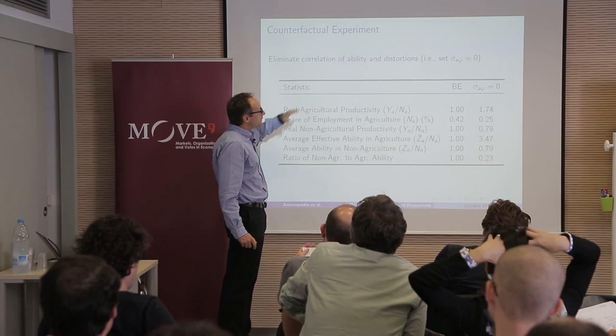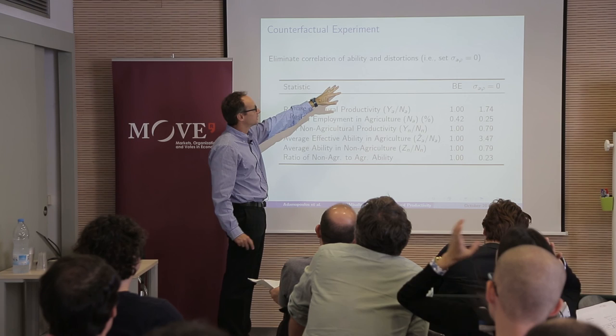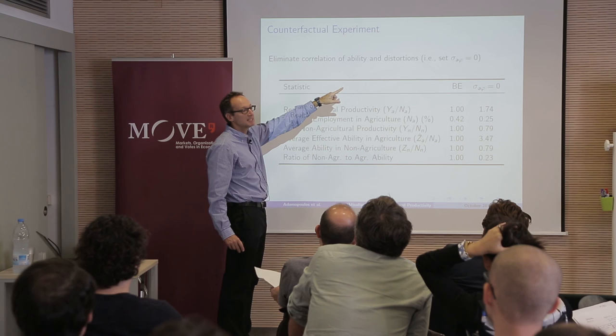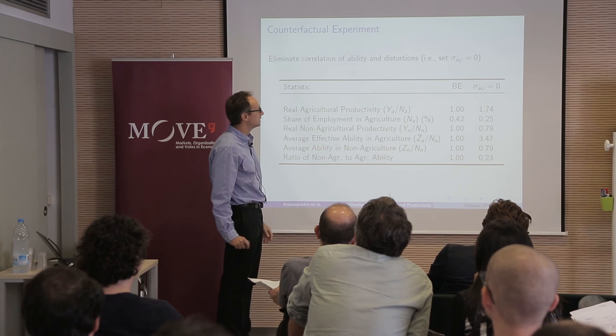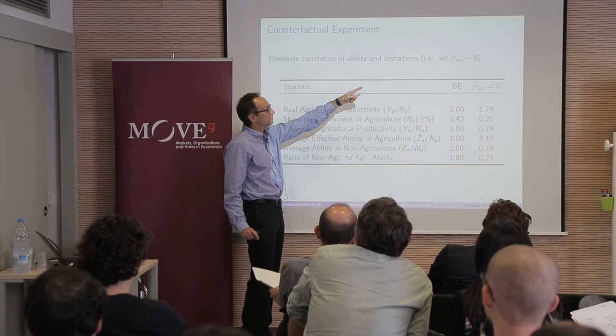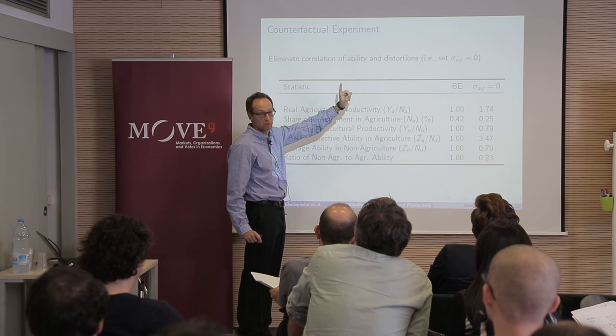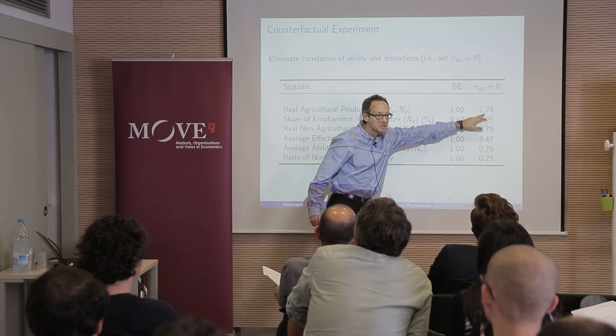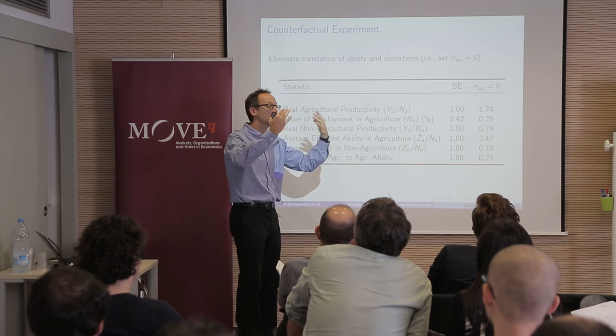The counterfactual we do in the paper — still very preliminary — is to eliminate the systematic component of the distortions: collapse the correlation of abilities and distortions. This should correspond to a situation where if you eliminate only that component in the static calculation, productivity was going to go up by 24%. In the model it goes up by 74%, because the systematic component allows more productive farmers to stay in agriculture.